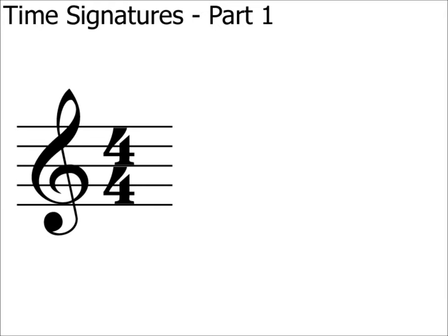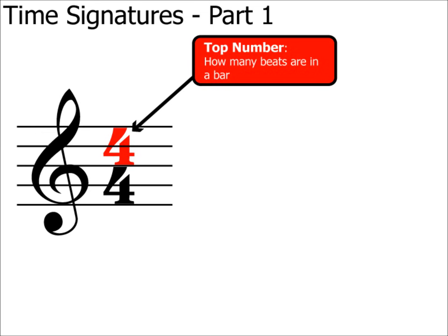Firstly, it's important to understand the meaning of a time signature. Here's a time signature which most people have seen before: 4/4. The top number tells us how many beats are in a bar. In this case, there are four beats in a bar. If the top number was 12, there'd be 12 beats in a bar. If it was a three, there'd be three beats in a bar, and so on. Technically, you can have any number you like at the top, as long as it's a whole number and not a fraction like two and a half, but we'll start with smaller numbers first.